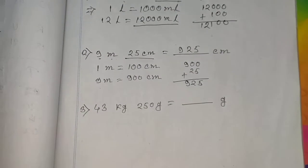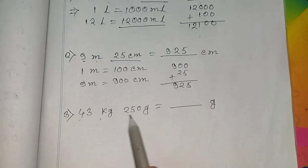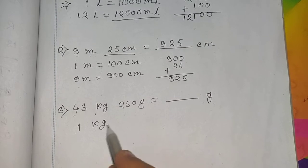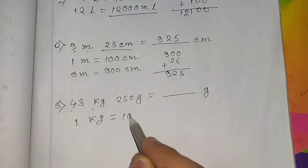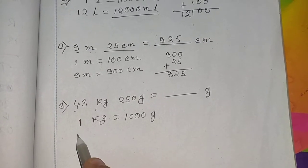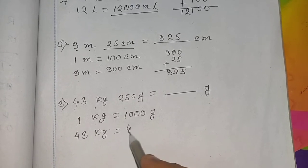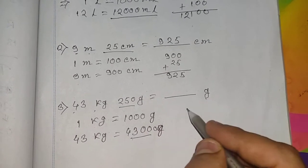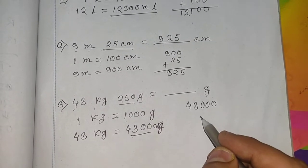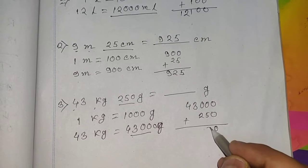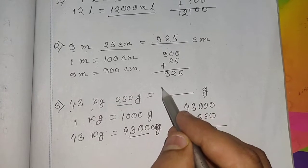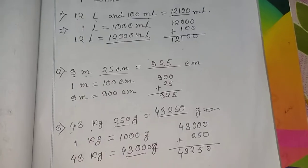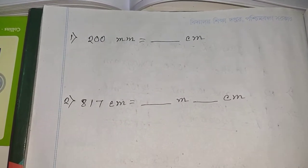Now convert 43 kg 250 grams to grams. We know 1 kilogram equals 1000 grams, so 43 kilograms equals 43,000 grams. Adding 250 grams, the answer is 43,250 grams.